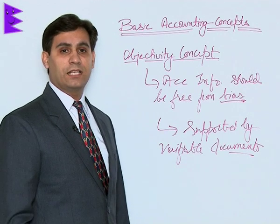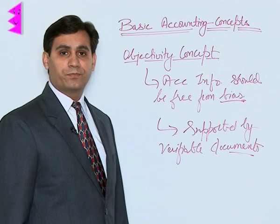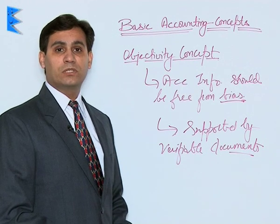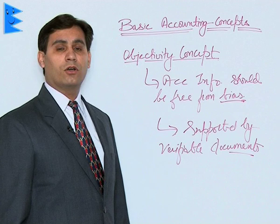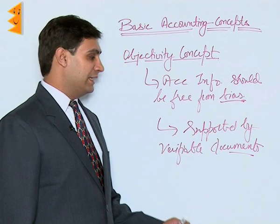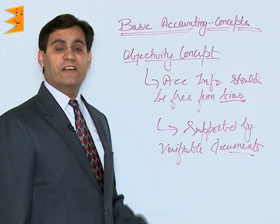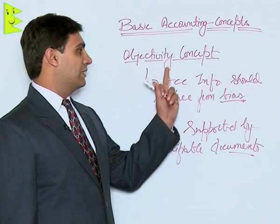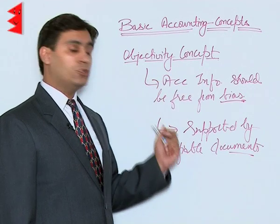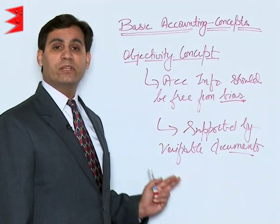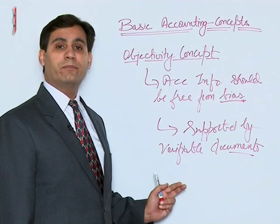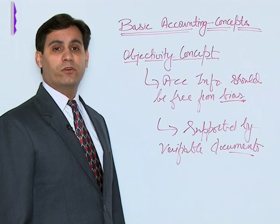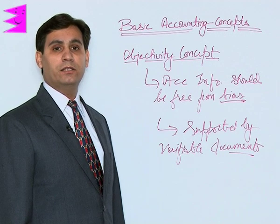For example, if you record a sale of 10 lakh rupees, that transaction must be supported by bills, agreements, or receipts — otherwise you cannot verify whether the information is correct. The objectivity concept ensures that information presented in accounts is free from bias and backed by valid proofs.